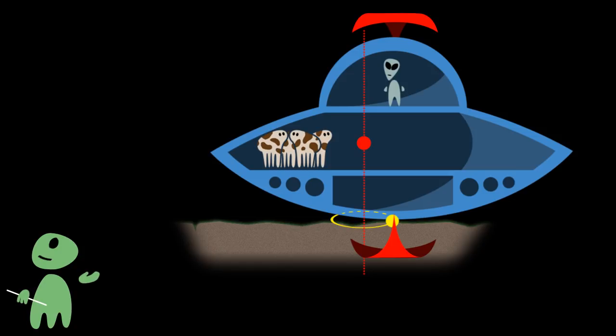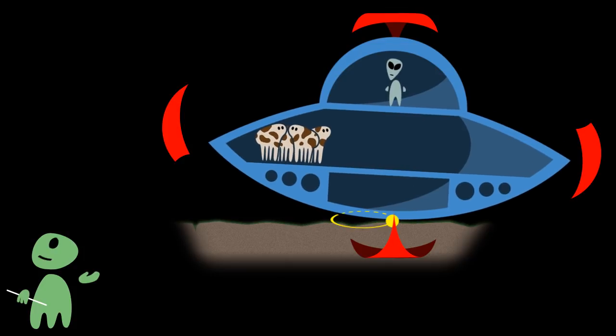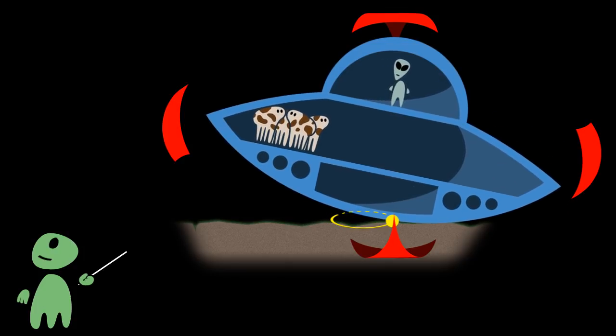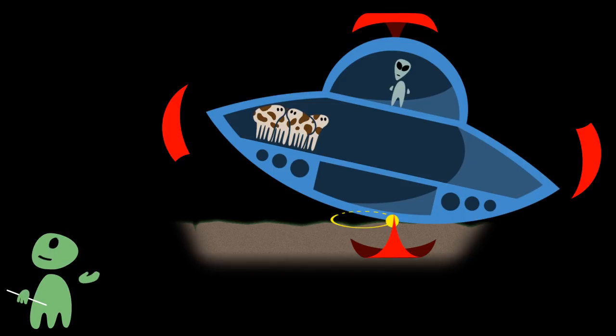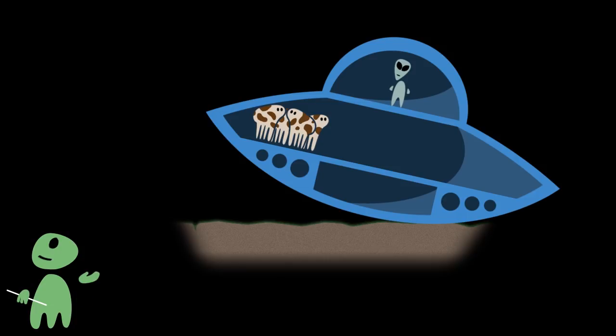Now, the second rule says that the friction on the ground will make the saucer tip, and the third rule says that this tipping moment will create a precession effect which makes the saucer turn sidewards instead of tipping, in this case such that the center of mass goes upwards. So, the cows will move upwards, not downwards.